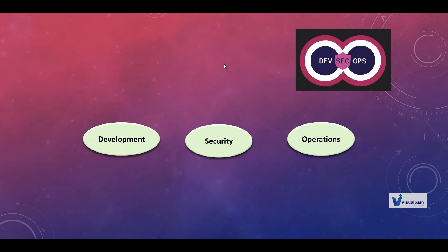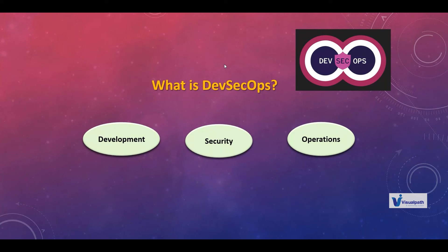In the DevSecOps culture, we have development plus security plus operations. DevOps means development plus operations. Security was a separate part earlier, but now security is integrated as part of DevOps because we need to automate security checks as well. It could be infra level, platform level, network level, application level, or software level security. How will you protect your data or information is all about security.